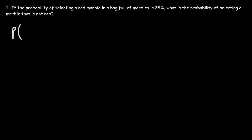So the probability of getting a red marble, we're told is 35%, which is 0.35. So what is the probability of getting a marble that is not red, or the complementary of R?